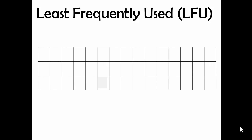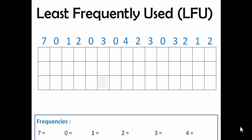I'll explain this algorithm using an example. This is the page frame buffer, these are the page requests, and these are the frequencies — by default they are set to zero because currently the page frame buffer is empty. The first page is 7, so we'll add 7 here. Because the page which is requested is not present in the RAM, it is called a page fault, so here a page fault will occur.